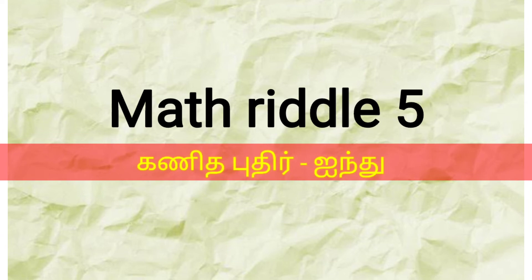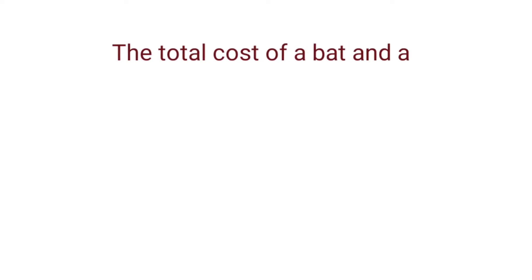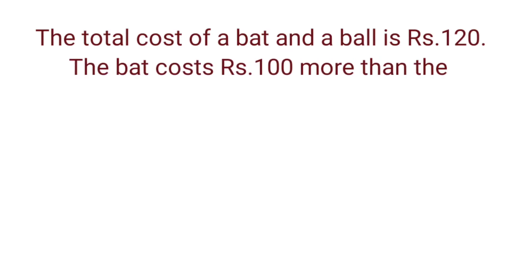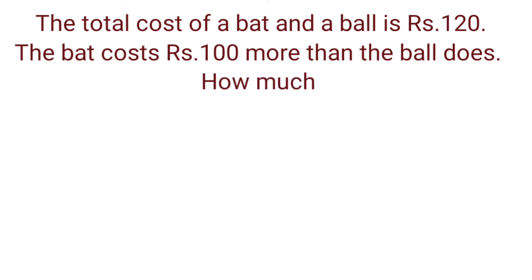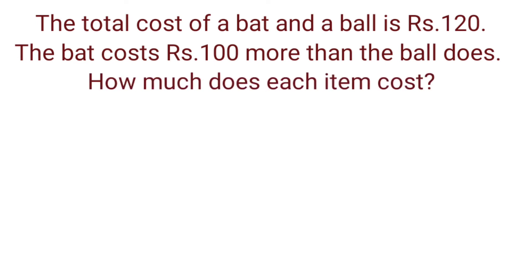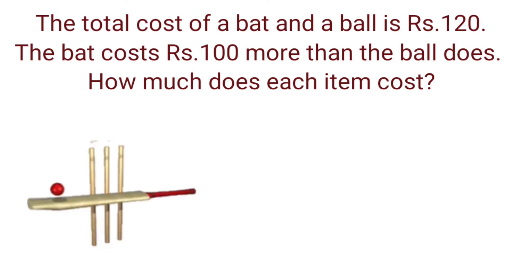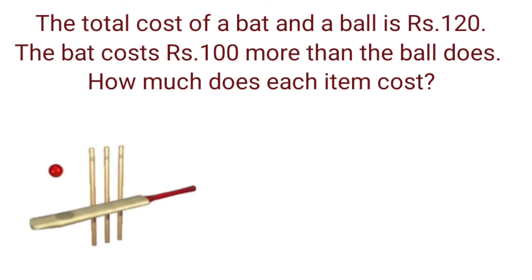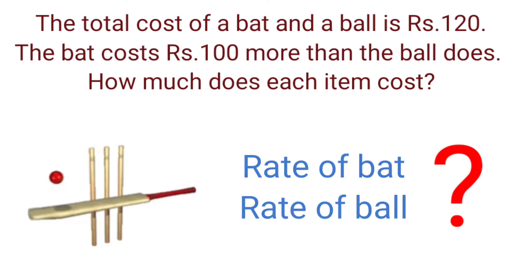Riddle Number 5: The total cost of a bat and a ball is Rs. 120. The bat costs Rs. 100 more than the ball. How much does each item cost? Your time starts now.